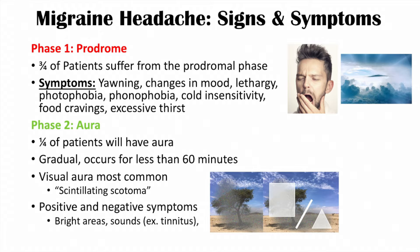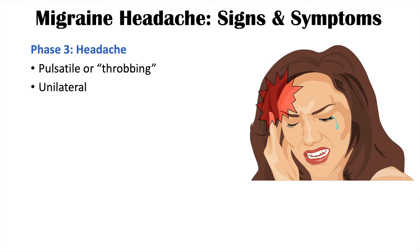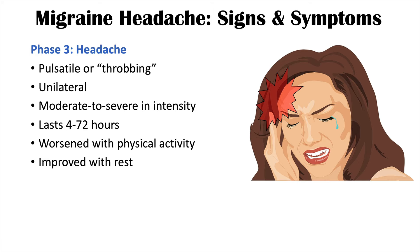After the aura, we move on to phase three — the actual headache. The headache is described as pulsatile or throbbing, unilateral (on one side of the head), and moderate to severe in intensity. It can last anywhere from four to 72 hours. This headache is worsened with physical activity and bright lights, and is often improved with rest and darker environments.